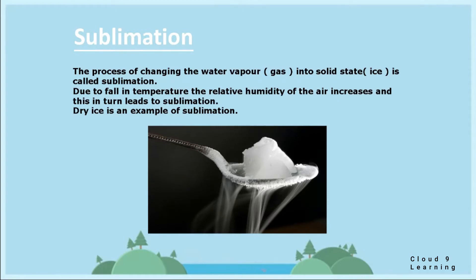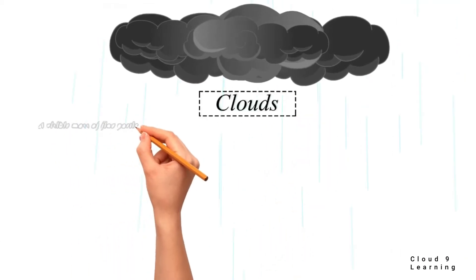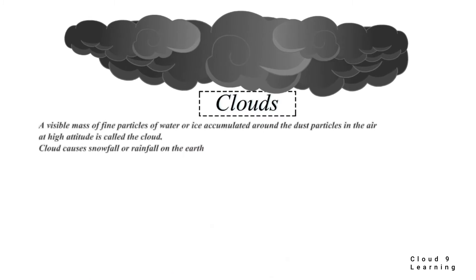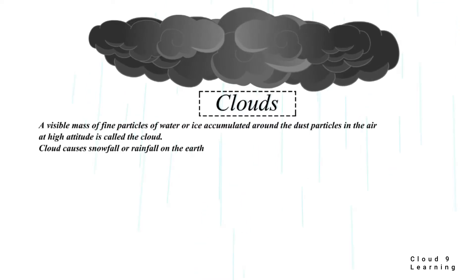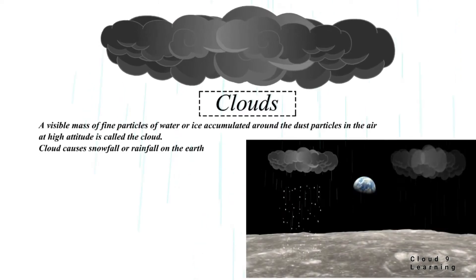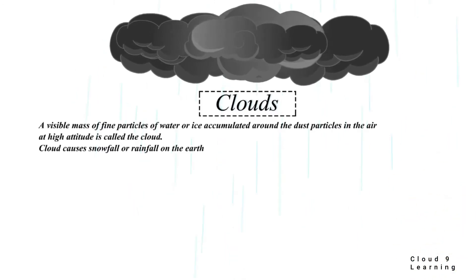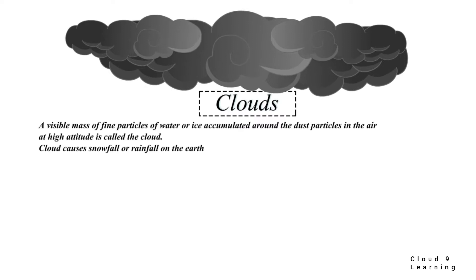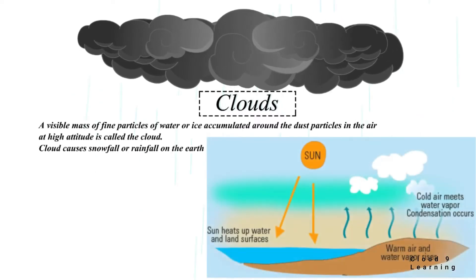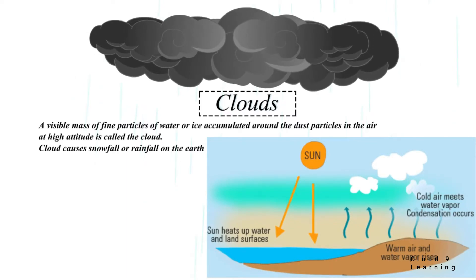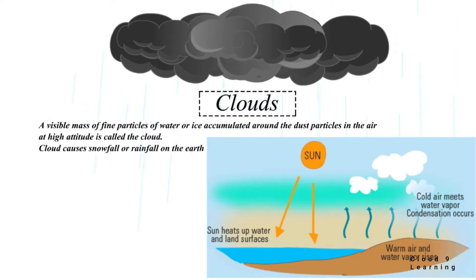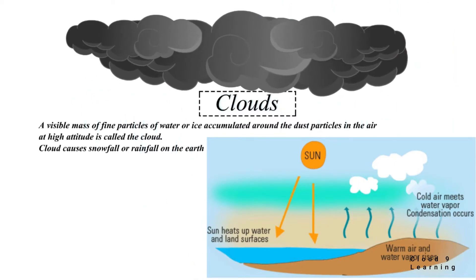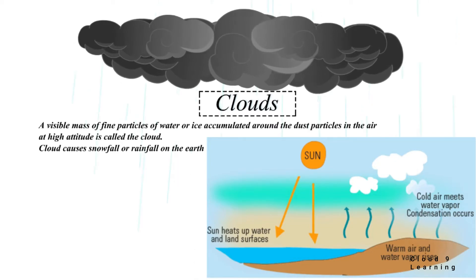As you can see in this picture, ice is directly getting converted into gas without melting. Now we will study about clouds. A visible mass of fine particles of water or ice accumulated around dust particles in the air at high altitude is called a cloud. Cloud causes snowfall or rainfall on the surface of the earth. The evaporated water goes up in the atmosphere, cools and gets accumulated around particles floating in the air, known as condensation nuclei containing aerosols. As the vapor rises and cools, these nuclei provide the surface for the vapor to condense.